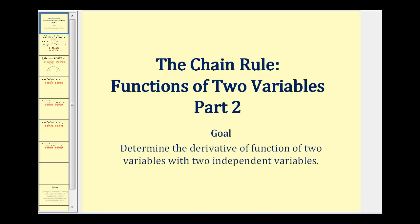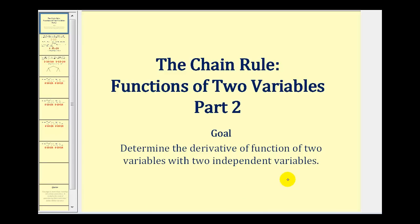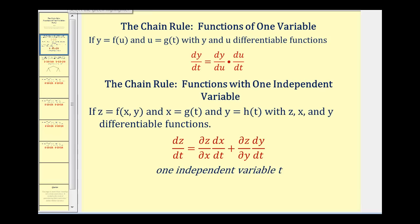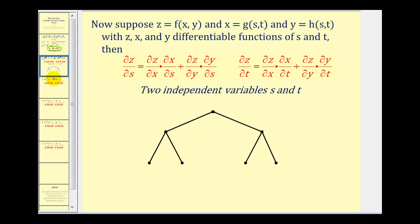Welcome to a second video on the chain rule for functions of two variables. In this video, we'll determine the partial derivatives of a function of two variables with two independent variables. In the previous video, we discussed how to determine dz/dt with a function in two variables with one independent variable. But now we're going to look at determining the partial derivative of z when z is defined in terms of x and y, but x is in terms of two variables and so is y.